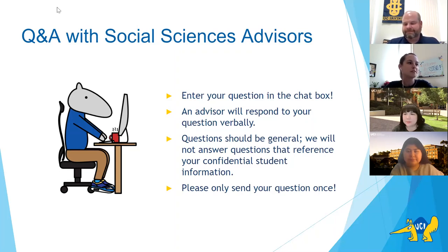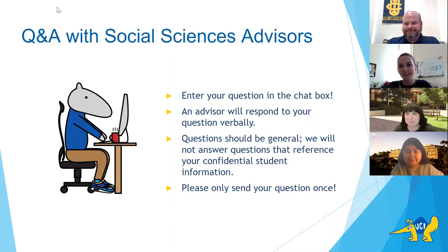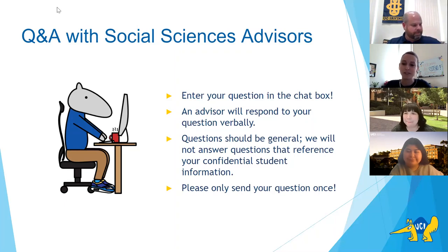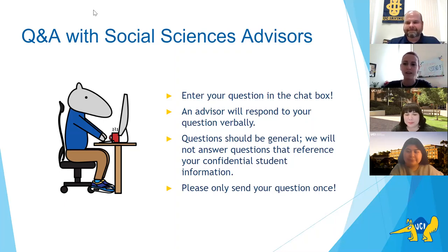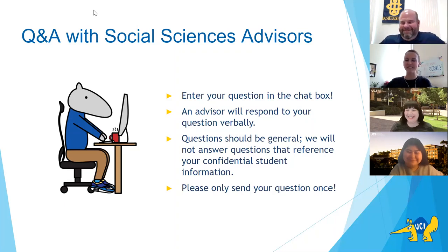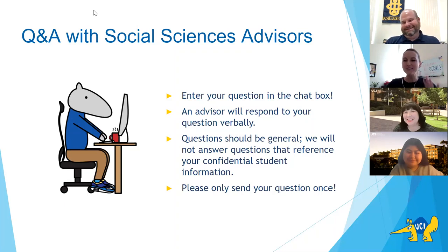A student is asking for an estimate of incoming transfer students in social sciences or in sociology specifically. We don't have specific numbers for sociology right now, but it's about 950 transfer students in the incoming class overall across all majors. Sociology is a smaller portion — probably around 80 to 100 sociology majors out of that class of 950 students.